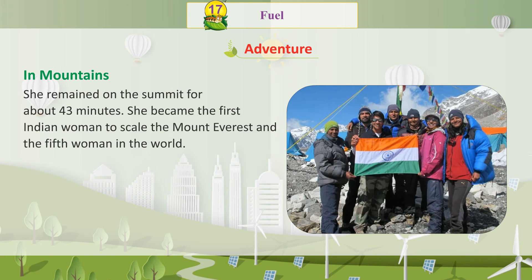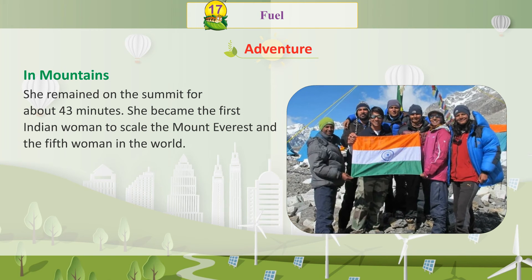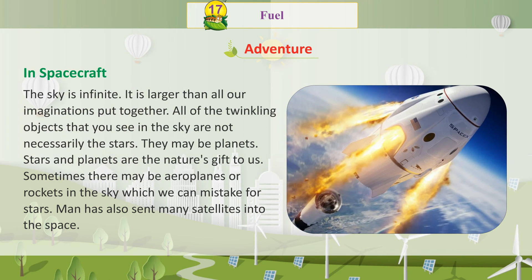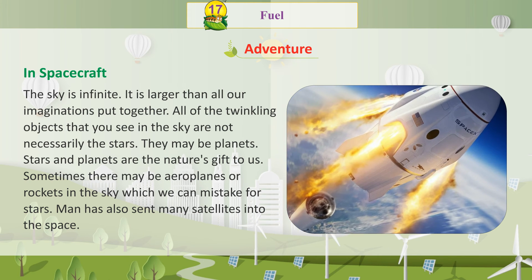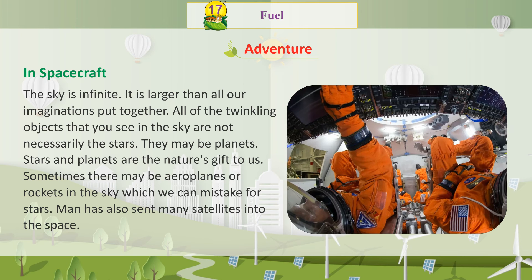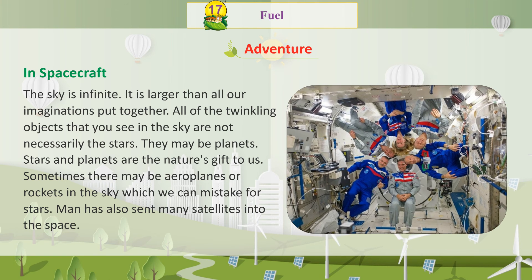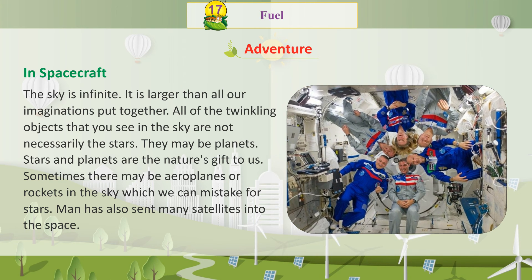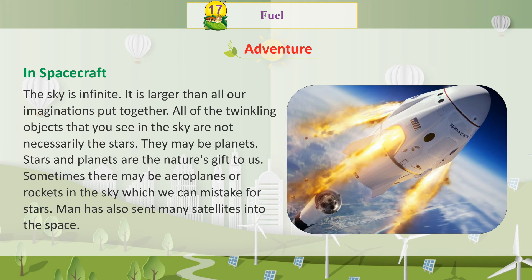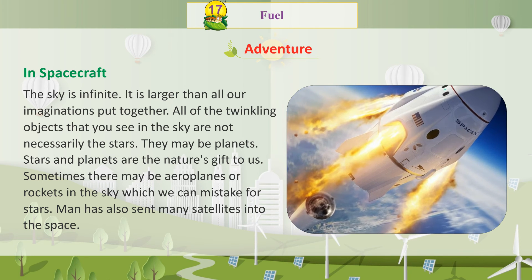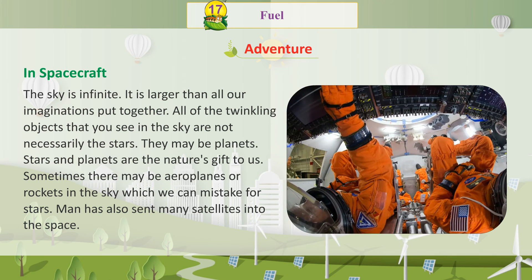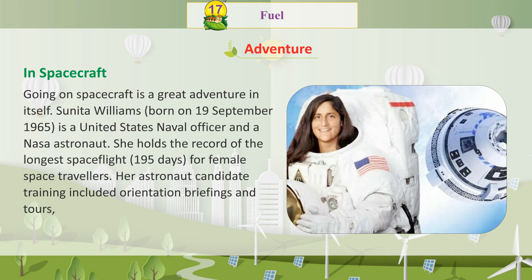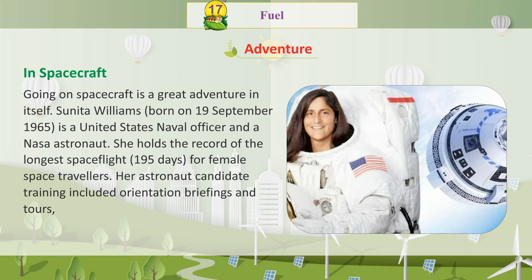She became the first Indian woman to scale Mount Everest and the fifth woman in the world to do so. The sky is infinite — larger than all our imaginations put together. All of the twinkling objects that you see in the sky are not necessarily stars; they may be planets. Stars and planets are nature's gift to us. Sometimes there may be aeroplanes or rockets in the sky which can be mistaken for stars. Man has also sent many satellites into space. Going on a spacecraft is a great adventure in itself.